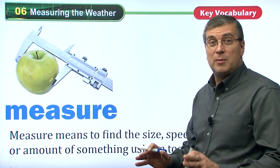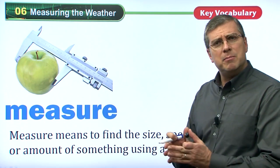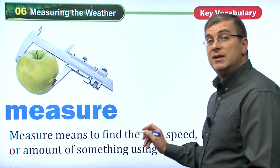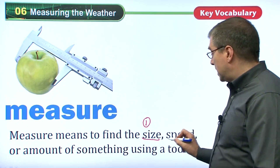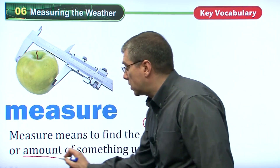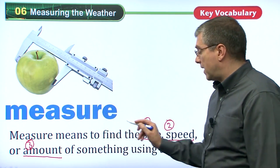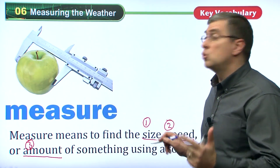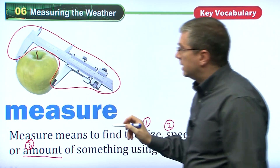Before we start to talk about what the measurements are, we need to look at what does 'measure' mean. What does it mean to measure something? There are three things: measure means to find the size — size is the first thing — speed is the second thing, and amount is the third thing of something using a tool.